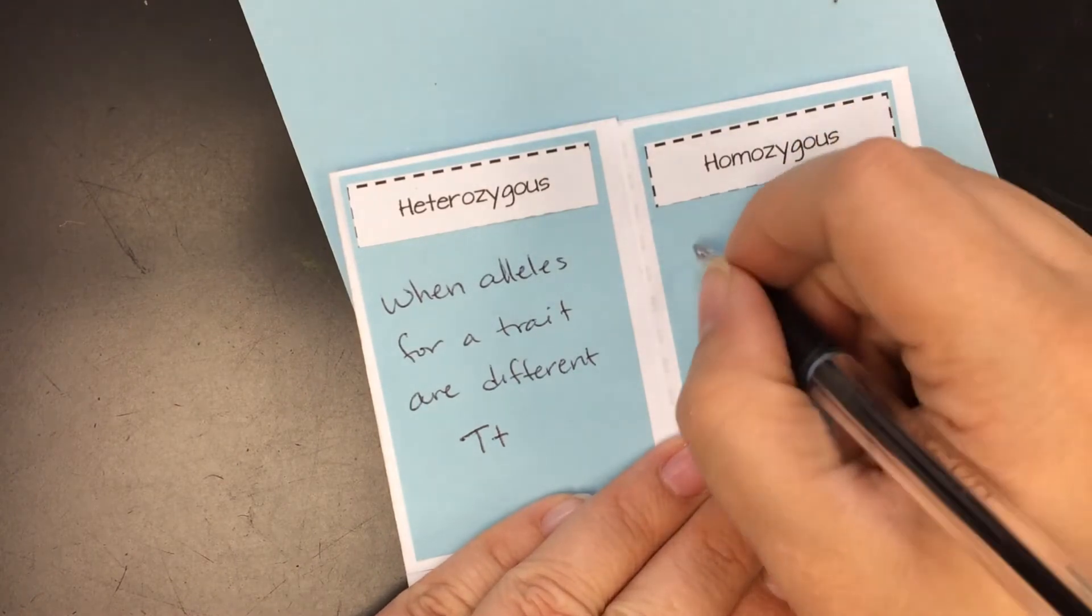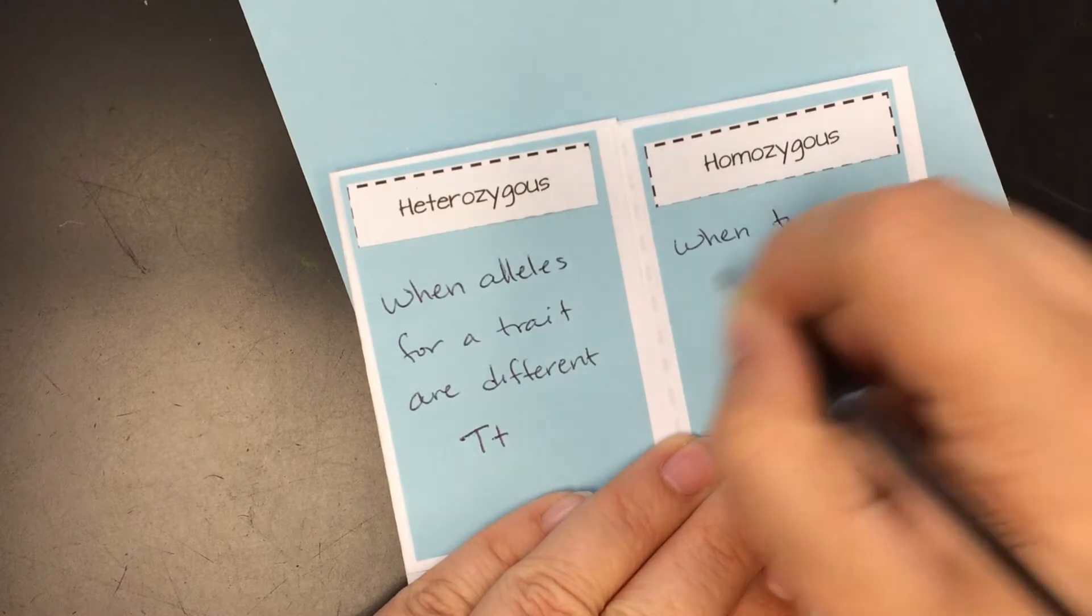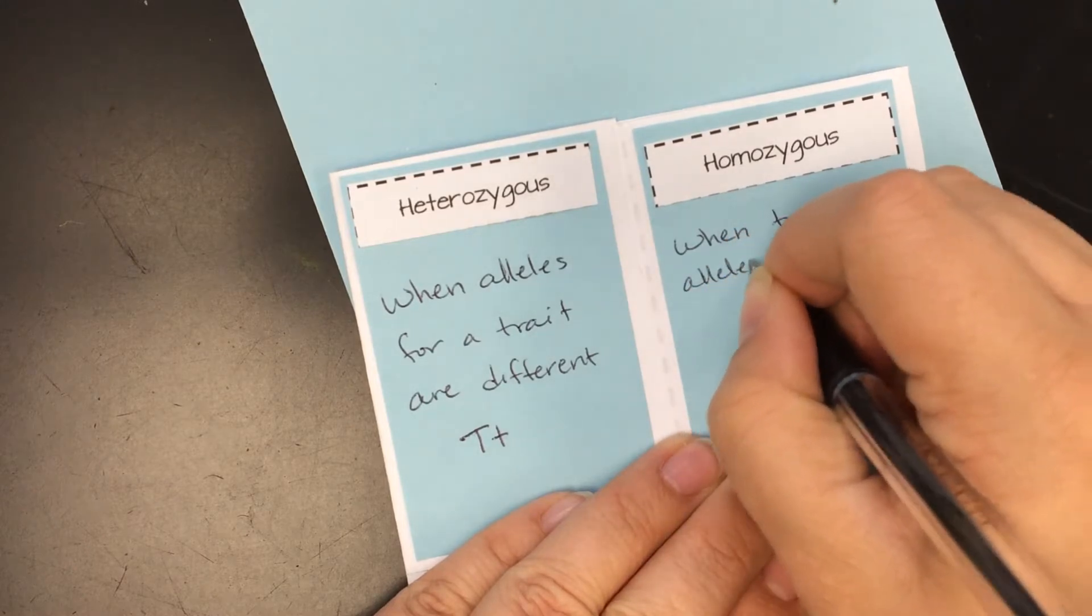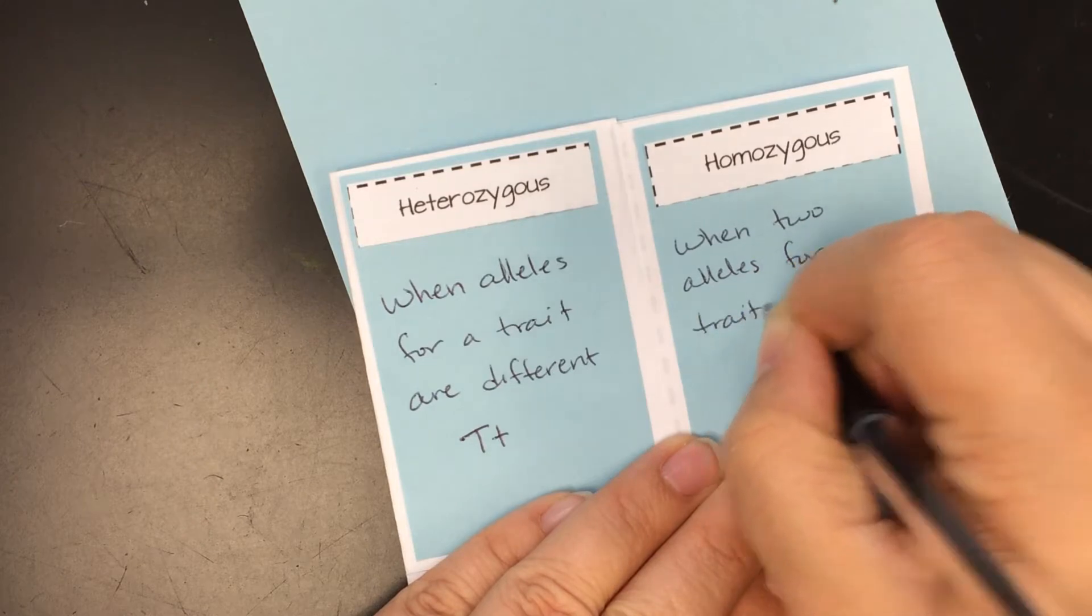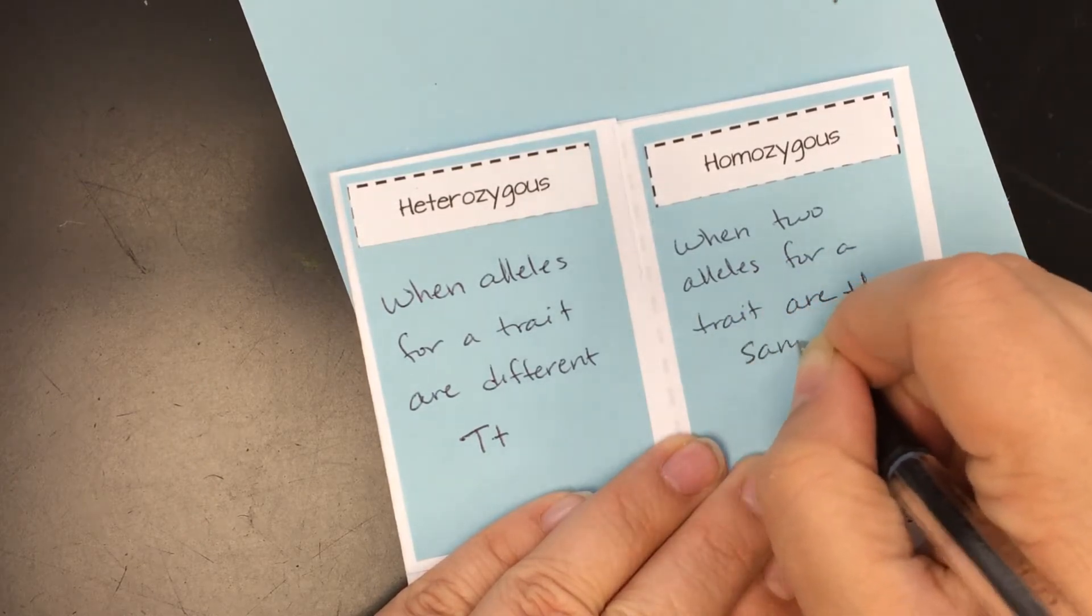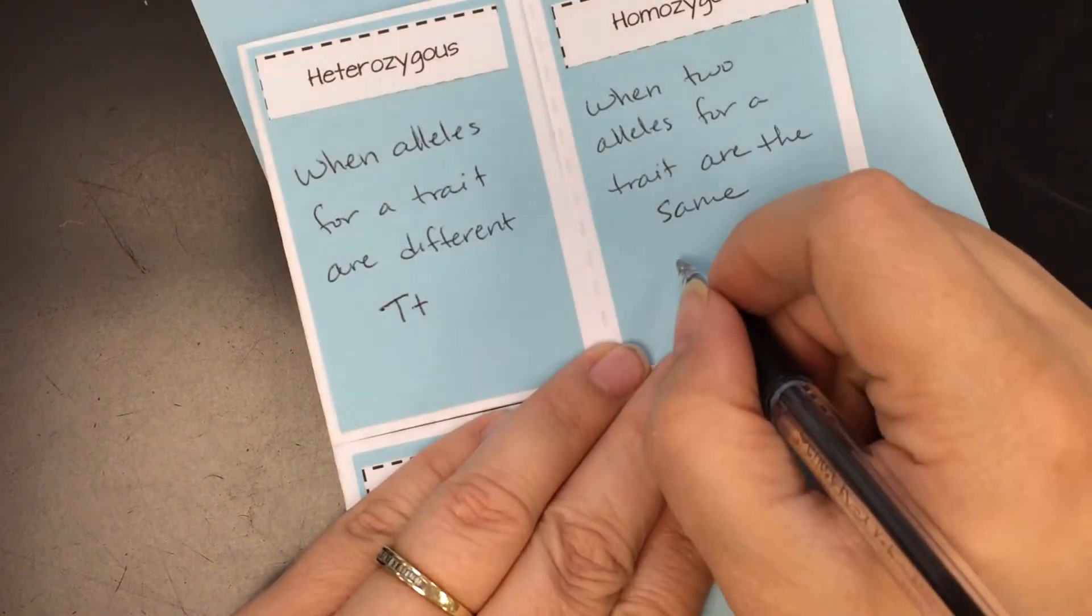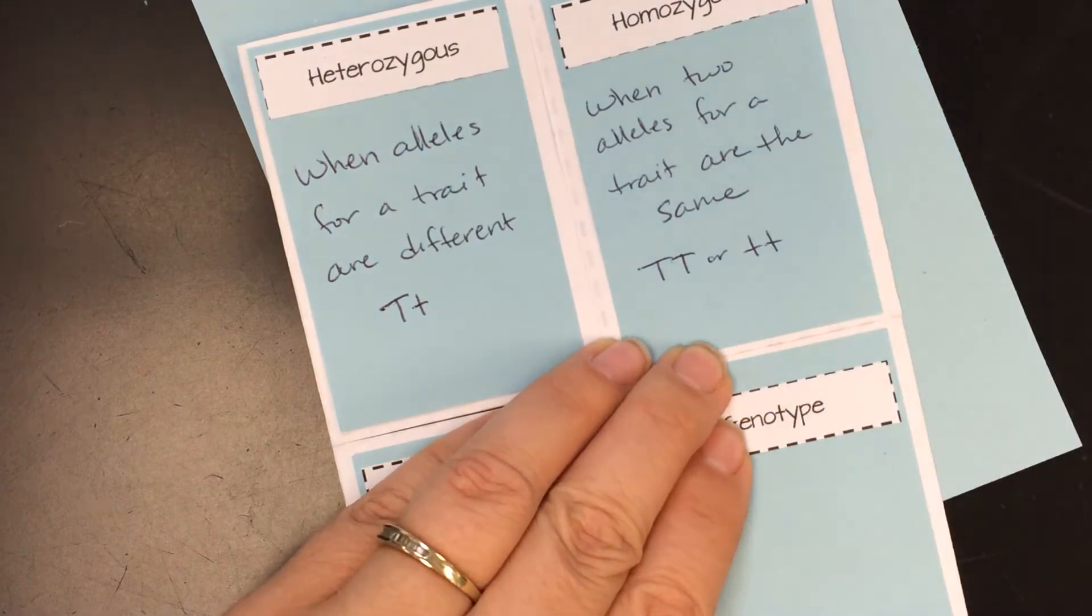Homozygous is when two alleles for a trait are the same. And so that's like big T, big T, or little t, little t.